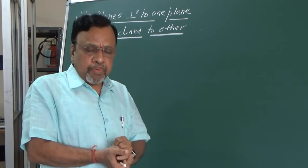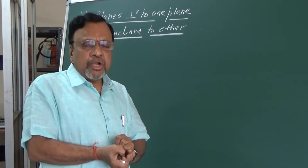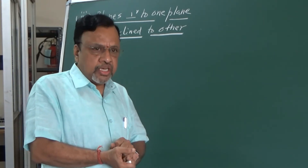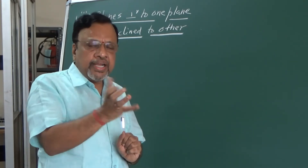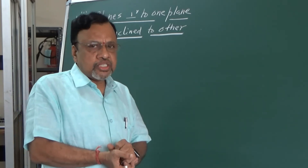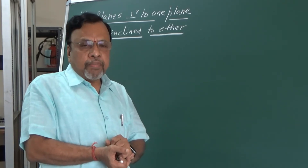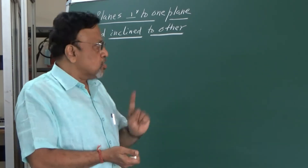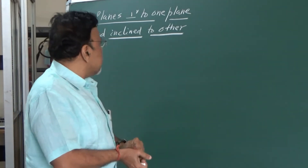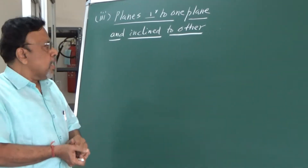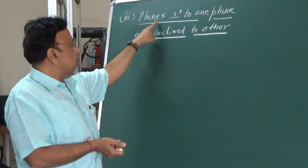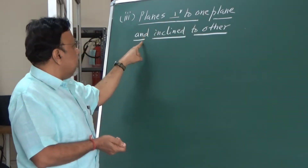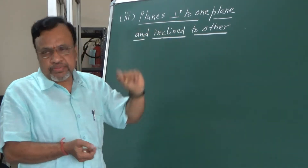One case is a particular plane parallel to one plane or parallel to both planes. Then we considered a plane contained in a particular plane, and also a plane perpendicular to one of the reference planes. Now in this particular session, we will come to the case wherein the plane figures or lamina is perpendicular to one plane and inclined to the other.